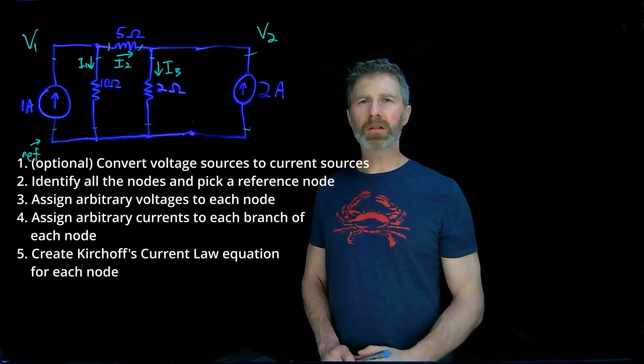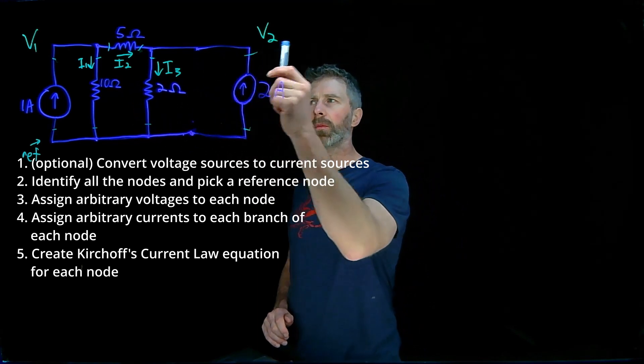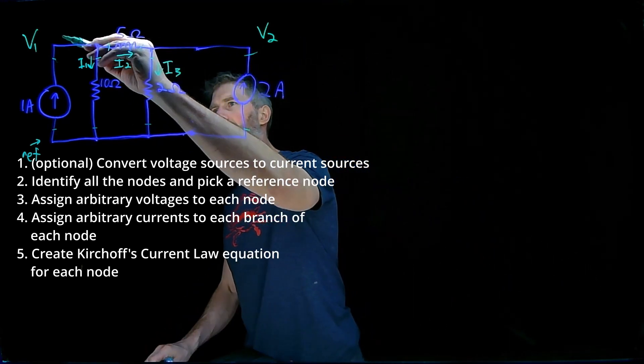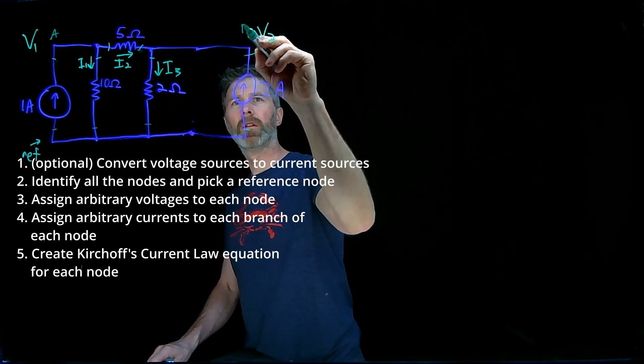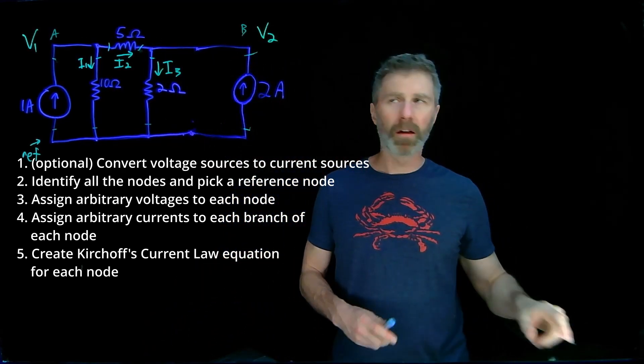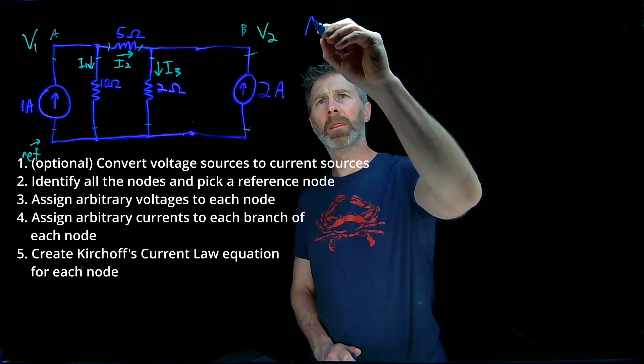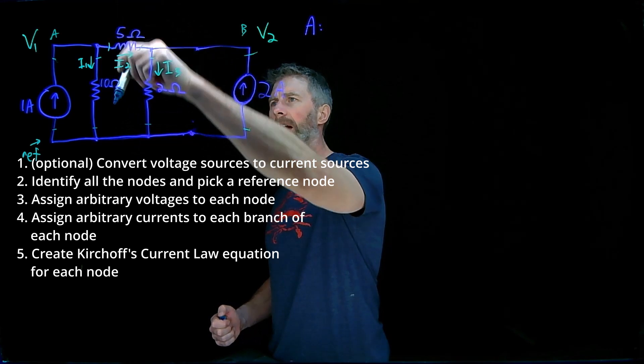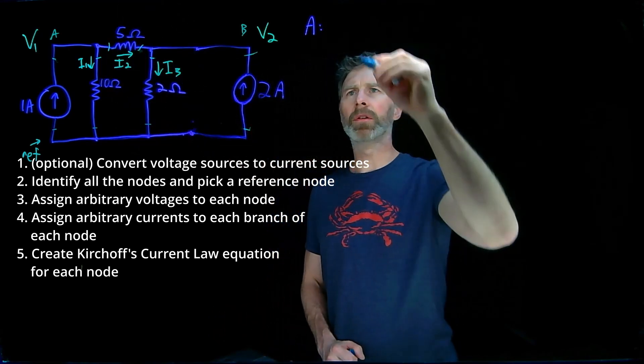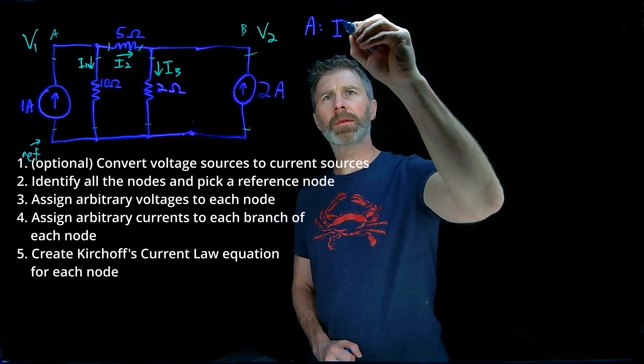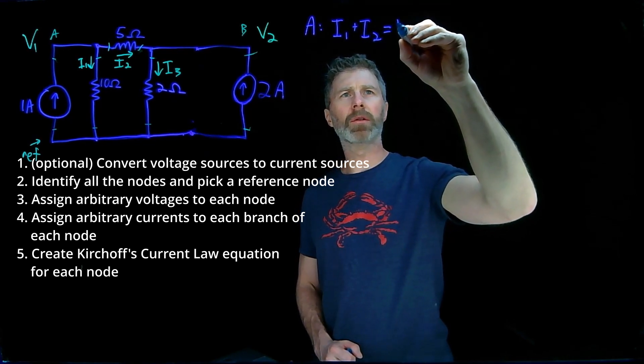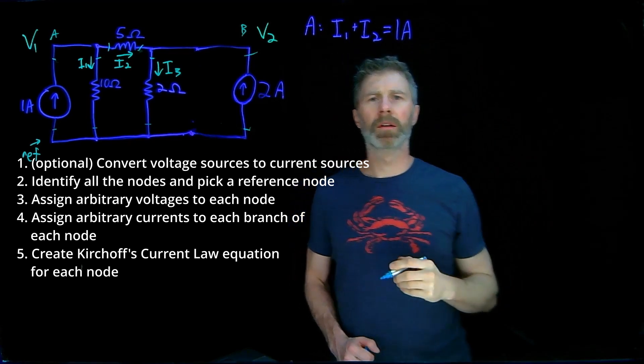The fifth step is to create a Kirchhoff's current law equation for each one of the nodes. We've got two nodes, V1 and V2. Let's call them A and B. For node A, we have one amp going into the node and I1 and I2 going out of the node. So the currents coming out of the node, the total of those currents, equals the current going into the node. I1 plus I2 equals one amp.